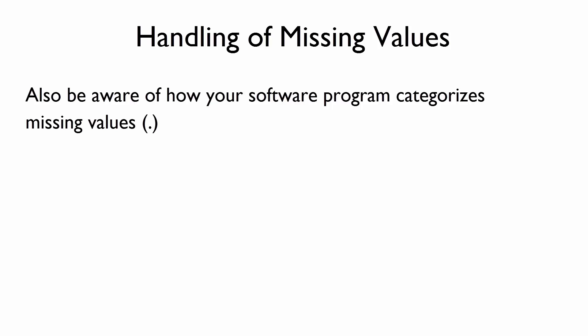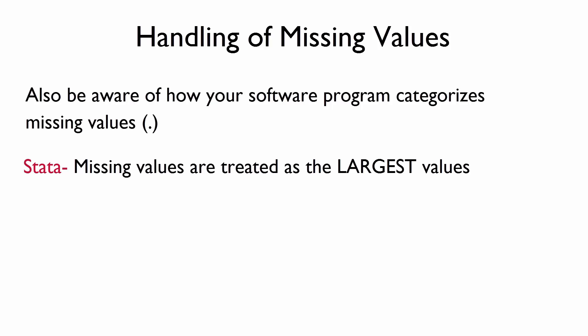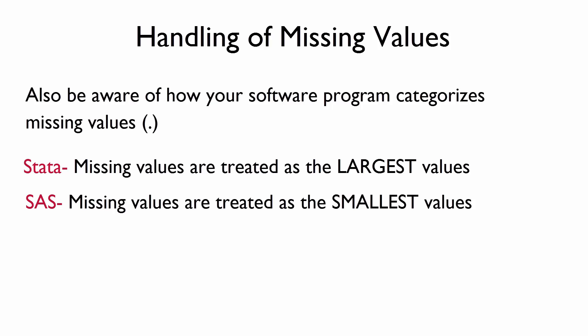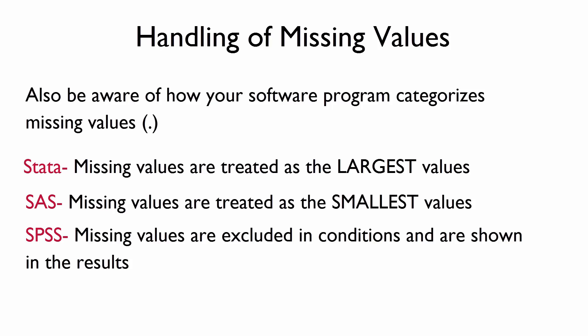Also be aware of how your software program categorizes missing values. For numeric variables, Stata treats missing values as the largest values. SAS treats missing values in numeric variables as the smallest value, and SPSS excludes missing values from conditional statements but shows the missing values in the results. Always check for missing values before starting an analysis in a statistical software.